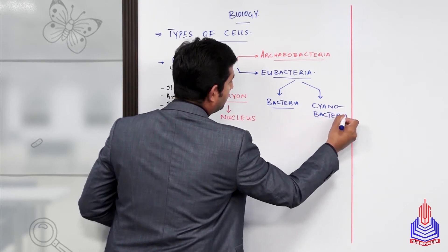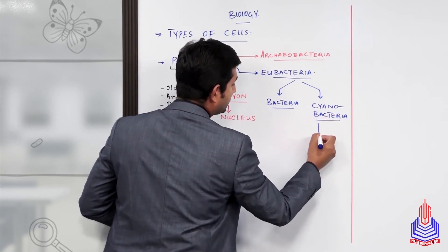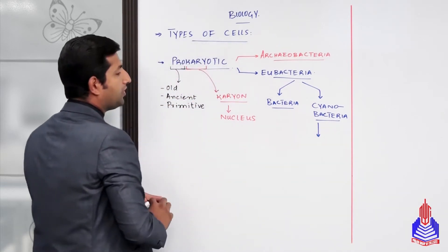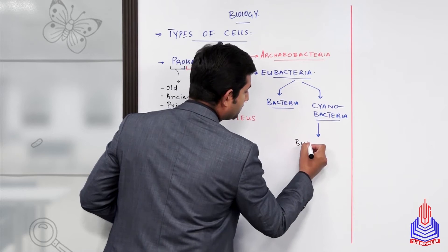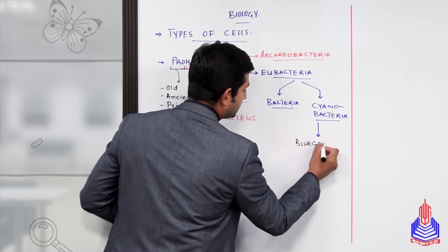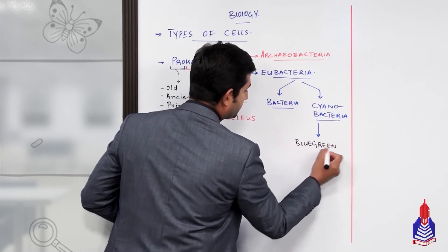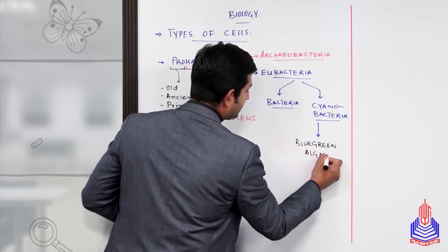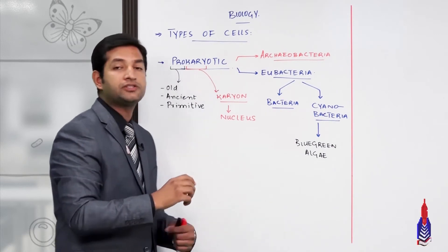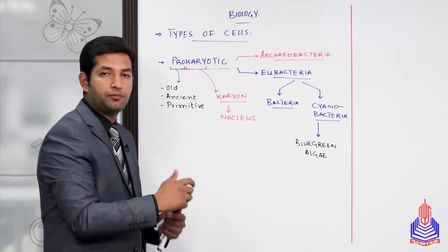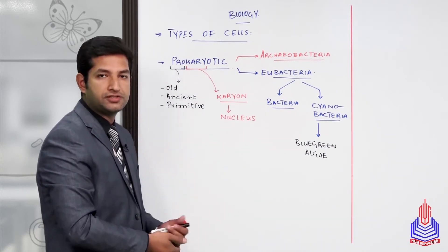Cyanobacteria have another name. Due to their photosynthetic ability, they are differentiated as blue-green algae. So this is a brief introduction to prokaryotic cell types and their divisions.